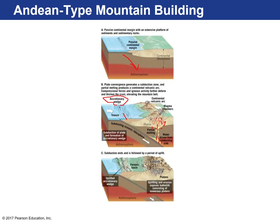Over time, a forearc basin forms from accumulated sediment eroded from the arc itself. A lot of the sediment and rock can be scraped off the surface of the subducting ocean plate to create an accretionary wedge — a really big mix of material all smashed together. With continued convergence, it can be pushed upward, creating an exposed forearc basin like a central valley, and then behind that, batholiths exposed in mountains.